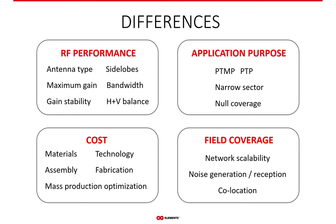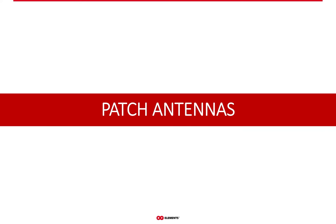Patch arrays and horns are very different types of antennas, resulting in fundamental differences in performance and properties. Price is no longer the only major decision factor when choosing between these two, because of interference conditions and the flood of all kinds of antennas on the market. If you haven't seen the first part of this webinar series on horns, you can find the recording on our YouTube channel.